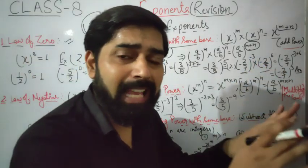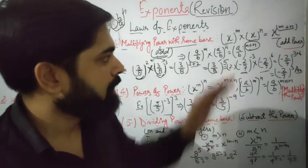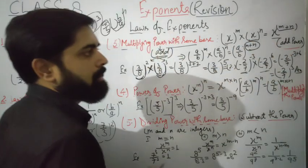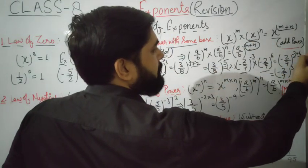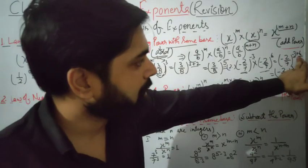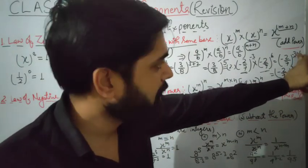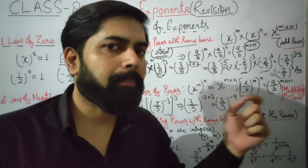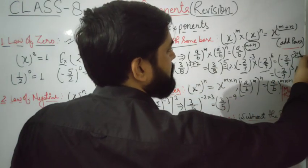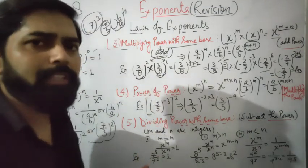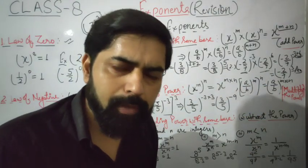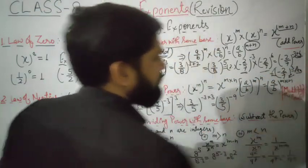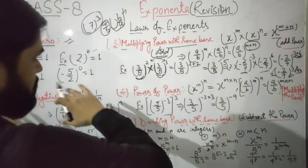The bases are the same, so add the powers: minus 3 plus 6. Since they have different signs, we subtract: 6 minus 3 equals 3, and the sign is positive because 6 is greater. So the answer is minus 2 upon 7 raised to the power 3.